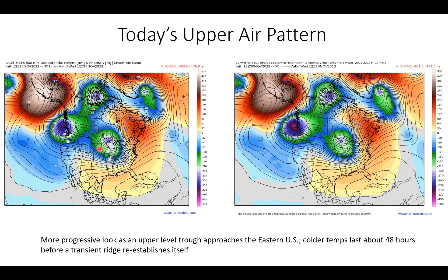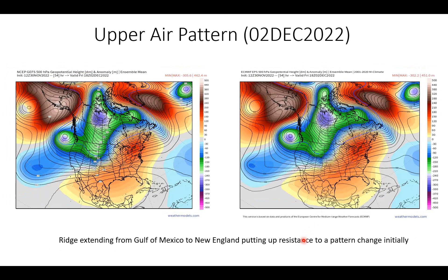Now let's examine the 500 millibar height and anomaly forecast charts, starting with today's upper air pattern. On each slide, the graphic on the left is going to be the GFS ensemble forecasting system, and on the right will be the European ensemble system. The 500 millibar GEFS is in fairly good agreement with the European EPS, showing troughing over the Midwest in both cases. We see some ridging out over the western Atlantic and a higher height center near the Cuba-Hispaniola area. We expect that as this trough pivots to the east, we'll see colder temperatures in the east — lasting basically about 48 hours before another transient ridge moves in.